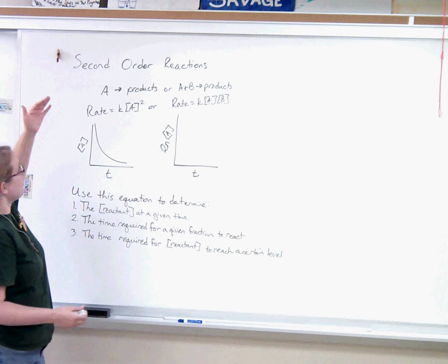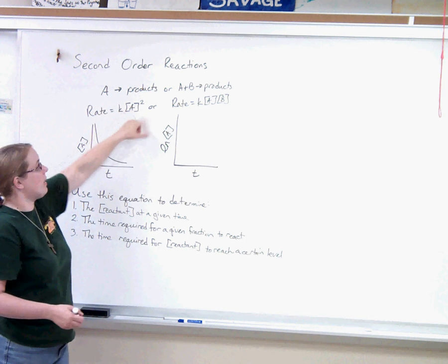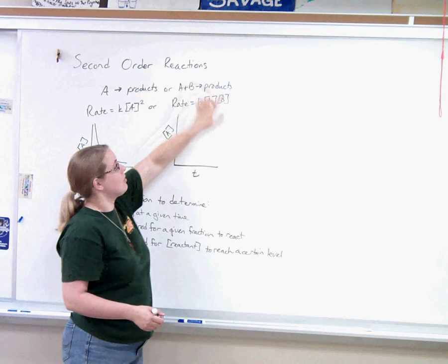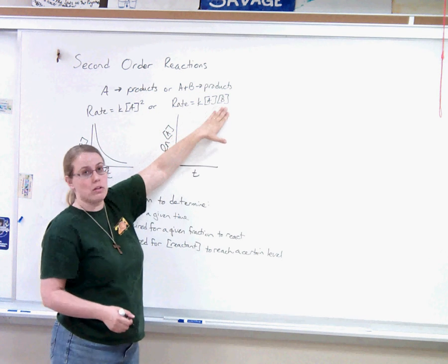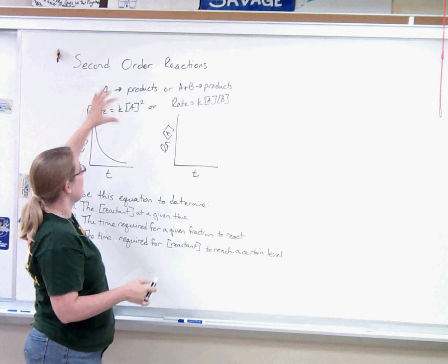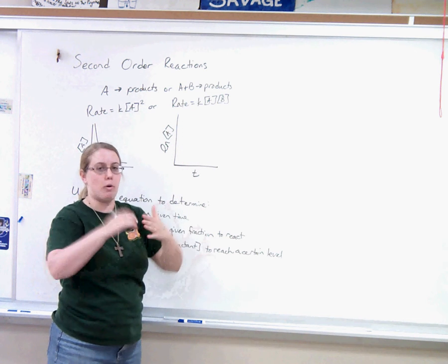In a second-order reaction, we either have one reactant turning into products with a rate law of that reactant squared, or we have two reactants turning into products with a rate law of each of those to the first power. It's only about the overall reaction order, so that means it could be 1 to the 2 or 2 to the 1. Either way, you have an overall reaction order of 2.